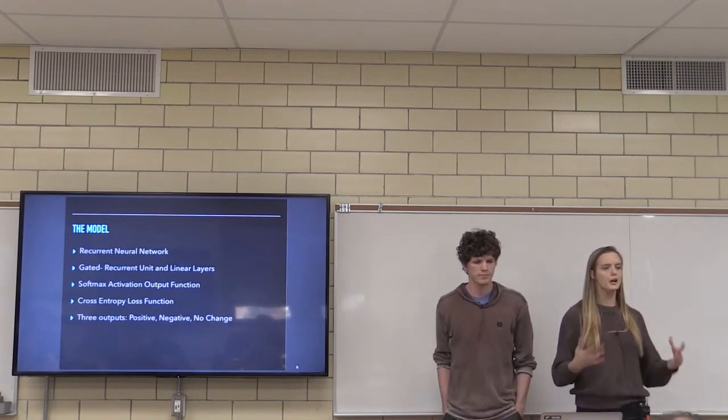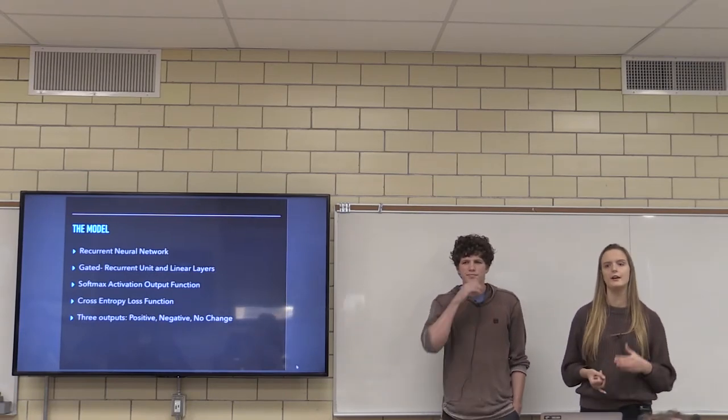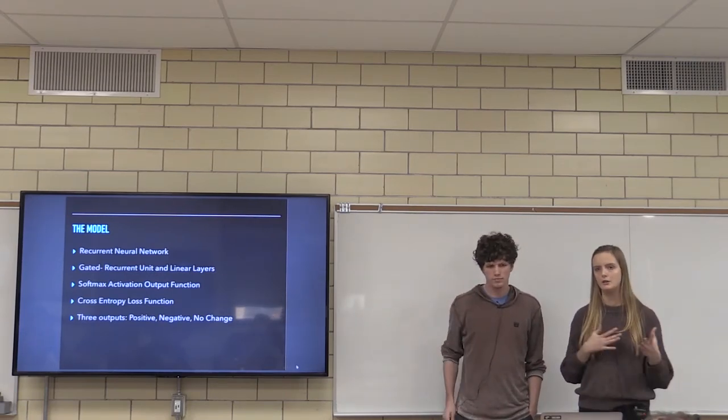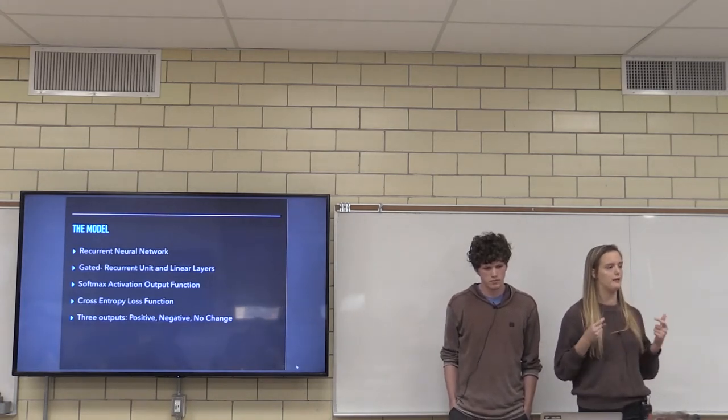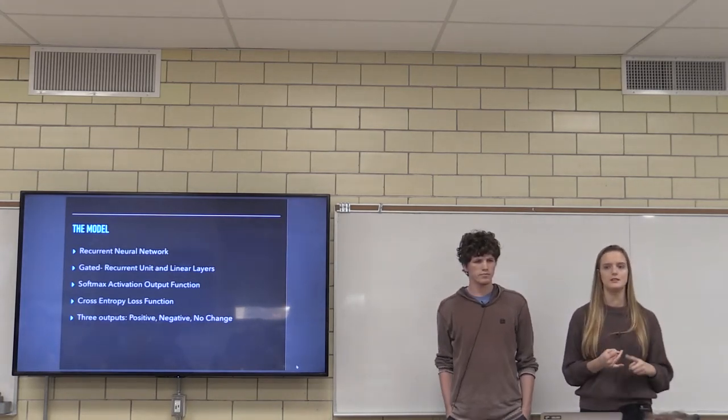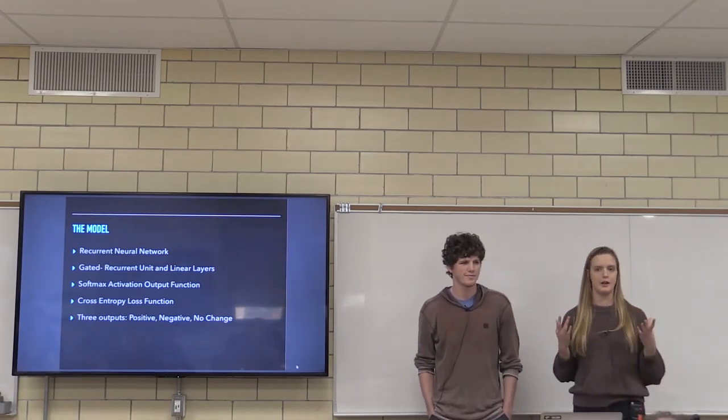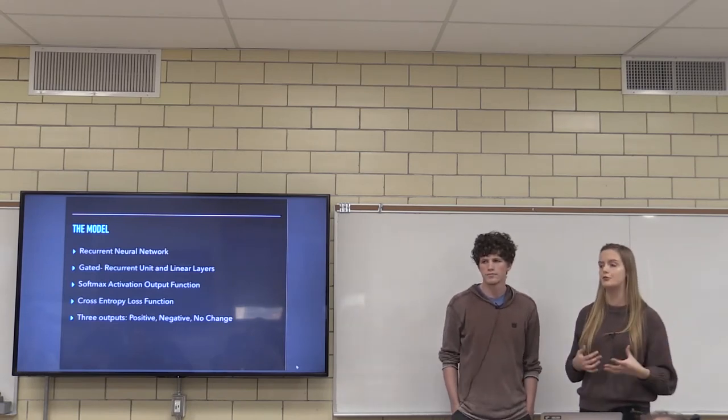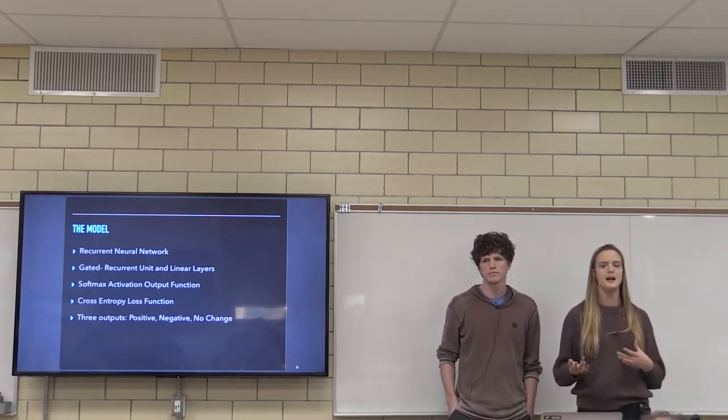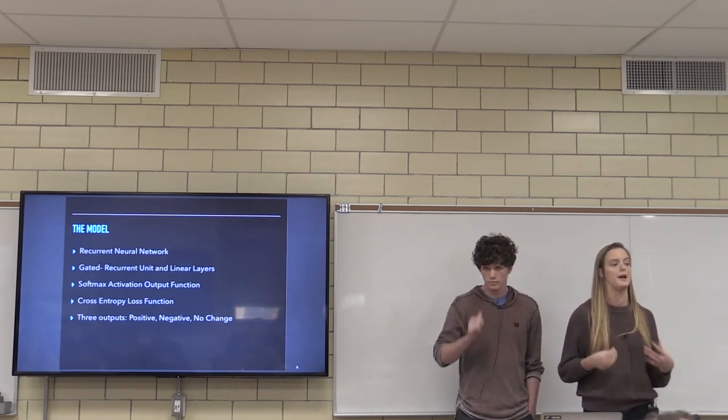So to solve this problem we created a recurrent neural network with three layers including a gated recurrent unit and two linear layers outputting the final result which was a three-item tensor involving the positive, negative and no change probability of a given tweet. Therefore we used the softmax activation output function which is typical for multi-class classification problems and that guided our decision to use cross entropy loss function when improving our model.